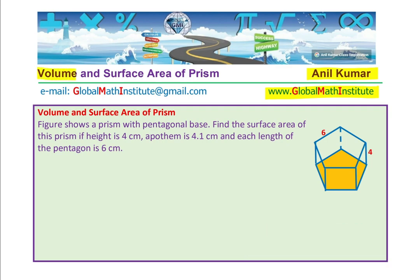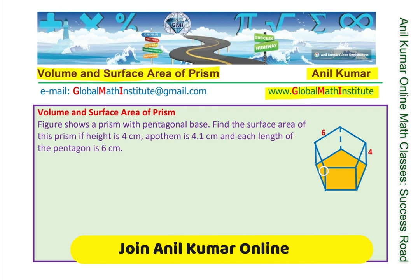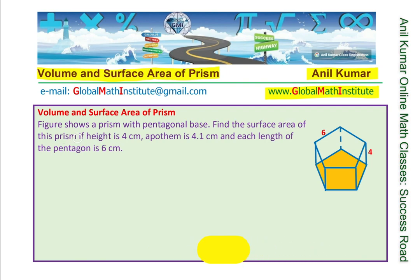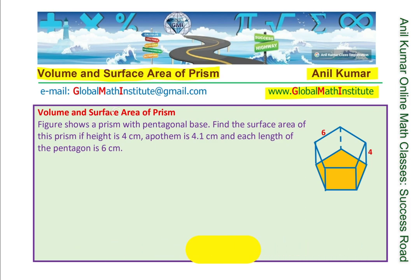We will consider volume and surface area of a prism. I have taken a prism with a pentagon as the base. The figure shows a prism with a pentagonal base. Find the surface area of the prism if height is 4 cm, apothem is 4.1 cm, and each side of the pentagon is 6 cm. Let us extend this question to both volume and surface area. That is the first question.